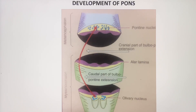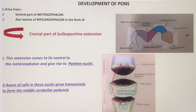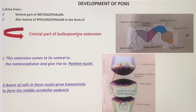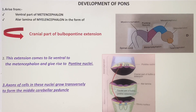Next we will discuss the development of the pons. The pons develops from the ventral portion of the metencephalon. The alar lamina of the myelencephalon forms the cranial part of the bulbopontine extension. Cells migrating at the level of metencephalon are called the cranial portion of the bulbopontine extension. This extension comes to lie ventral to the metencephalon and gives rise to the pontine nuclei. Axons of the cells in these nuclei grow transversely and form the middle cerebellar peduncle.